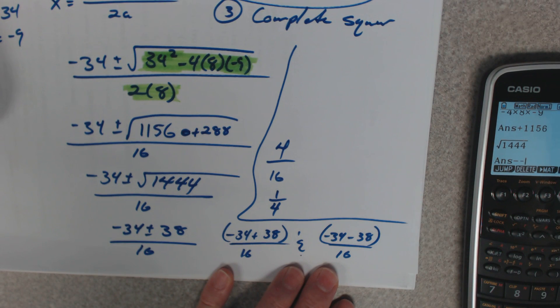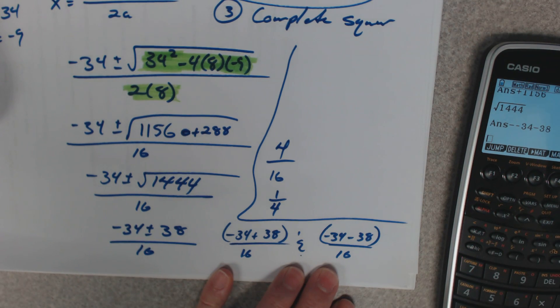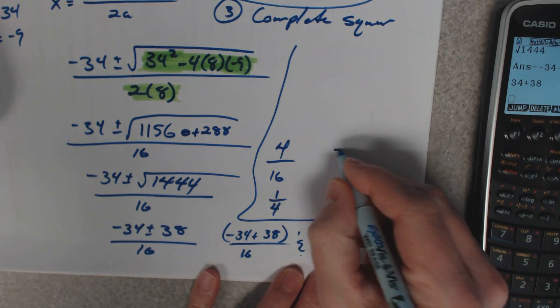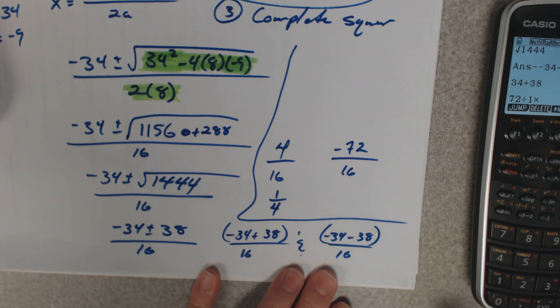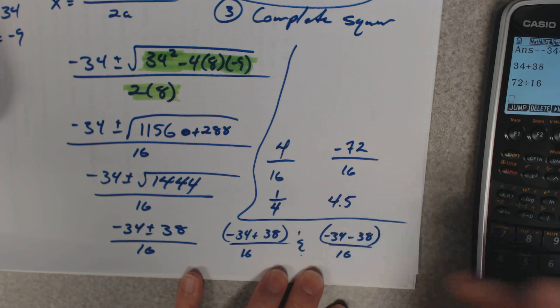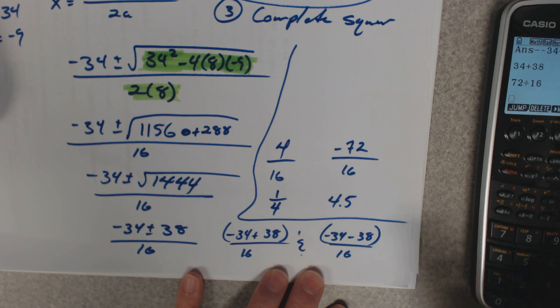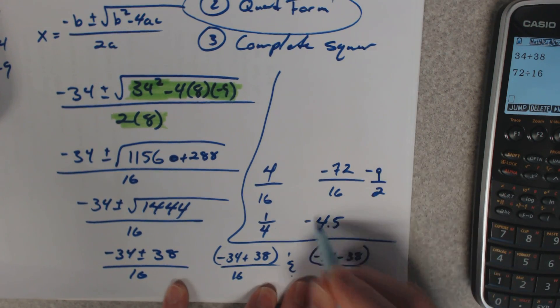Negative 34 minus 38. Well, 34 and 38, that's a negative 72 over 16, and 72 divided by 16, 4.5. So as a fraction it'd be 9 halves. So negative, negative.